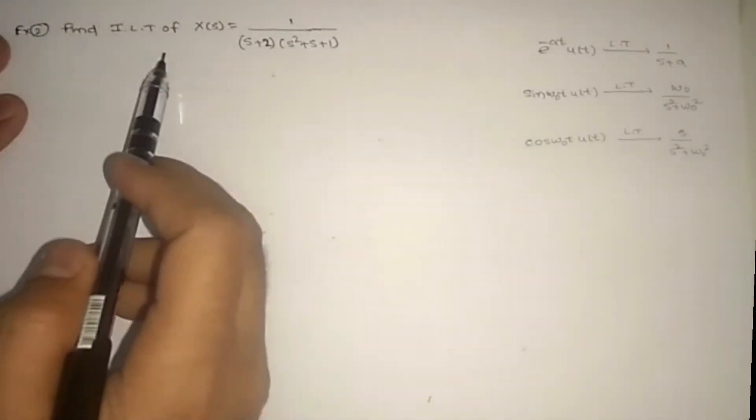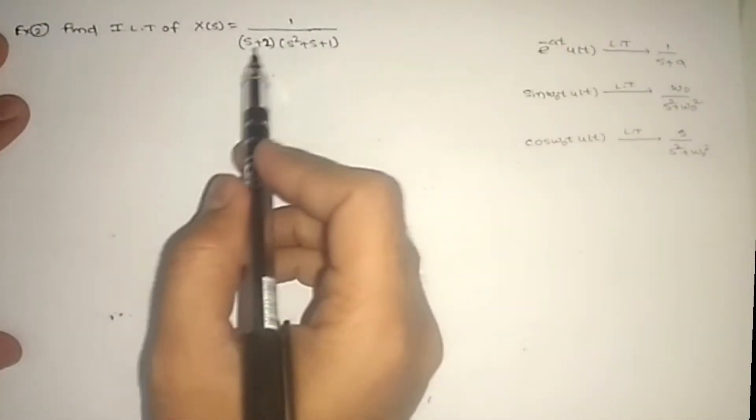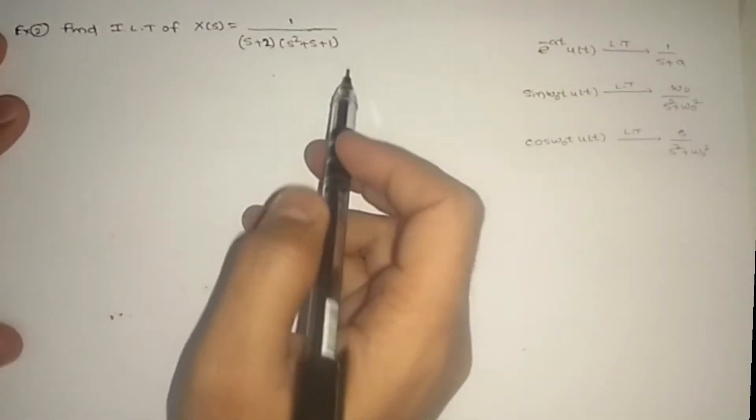Let us see Example 2. Find the inverse Laplace transform of X(s) equal to 1 divided by (s+2)(s²+s+1).